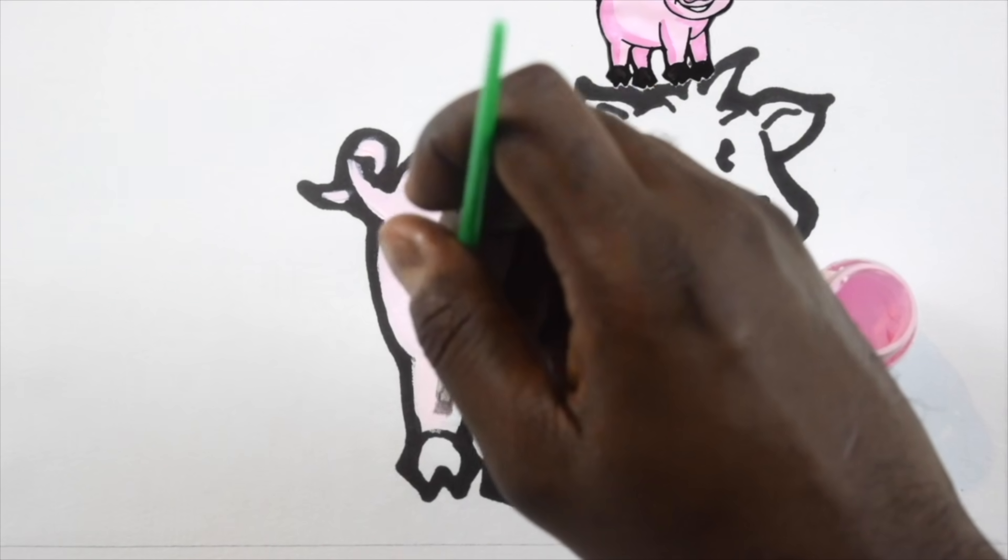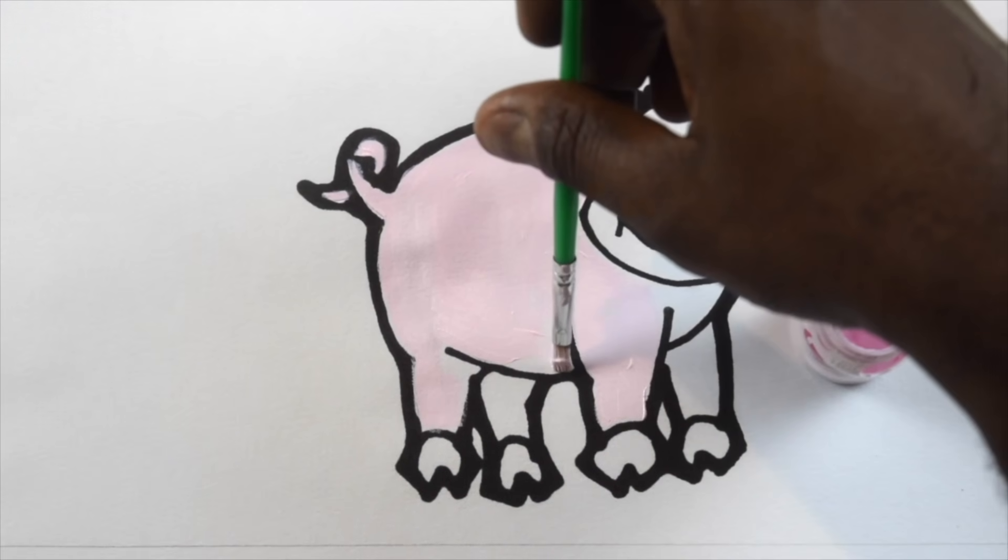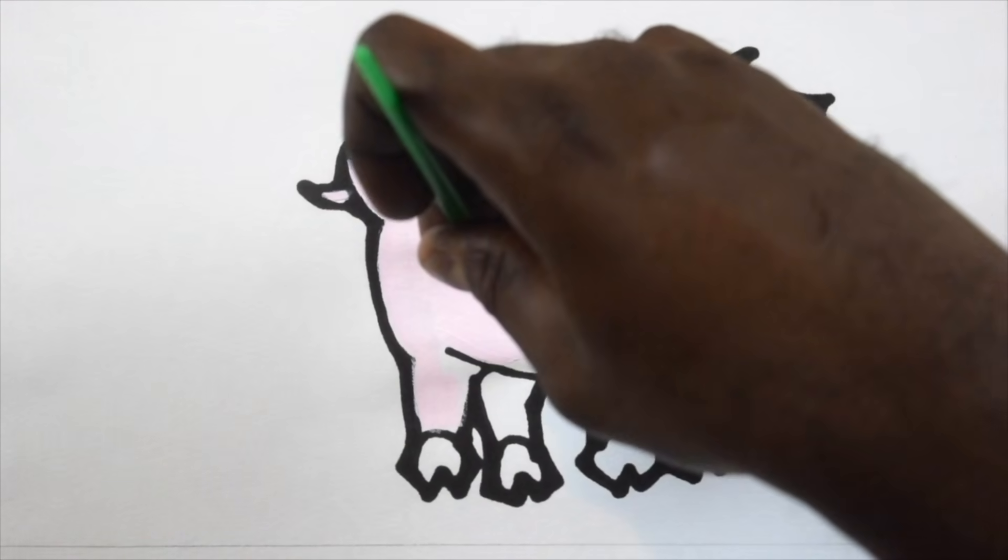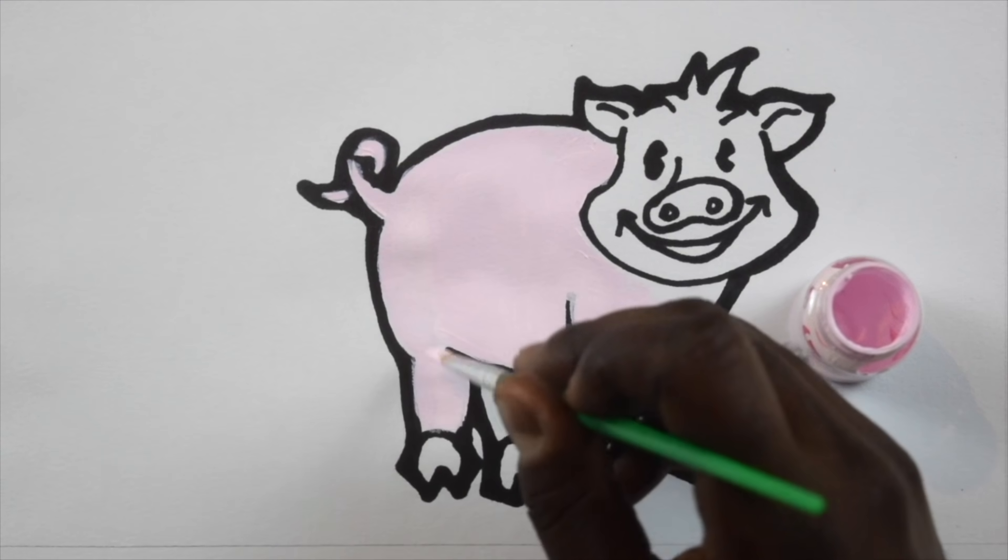A pig's snout is an important tool for finding food in the ground and sensing the world around them. Like humans, pigs are omnivores, meaning they eat both plants and other animals.